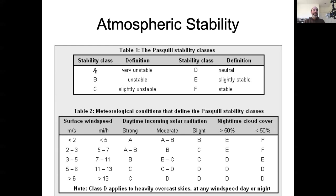We see that A is the most unstable, D is neutral — so it's neither stable nor unstable — and F is stable.